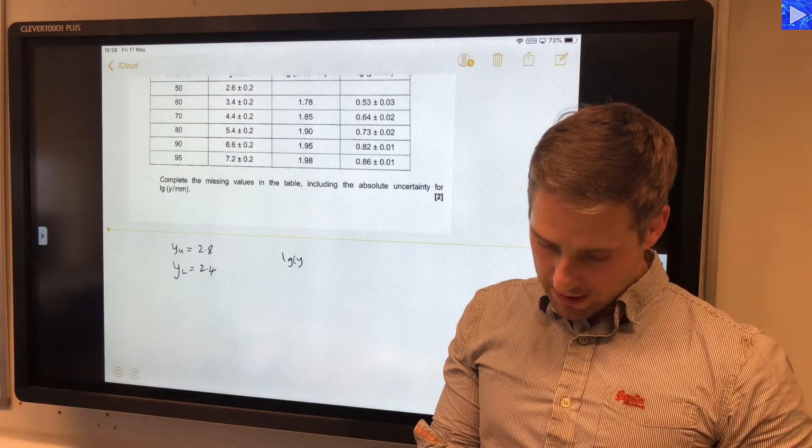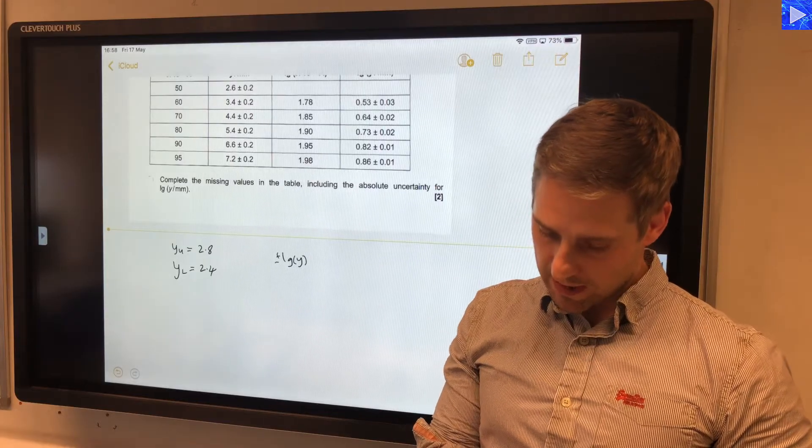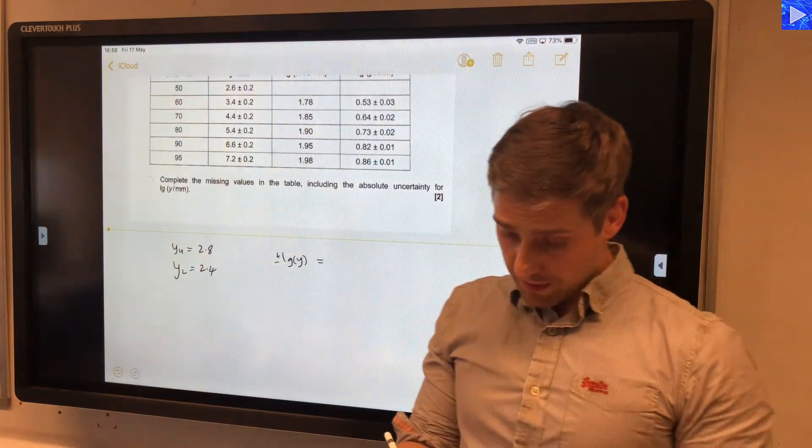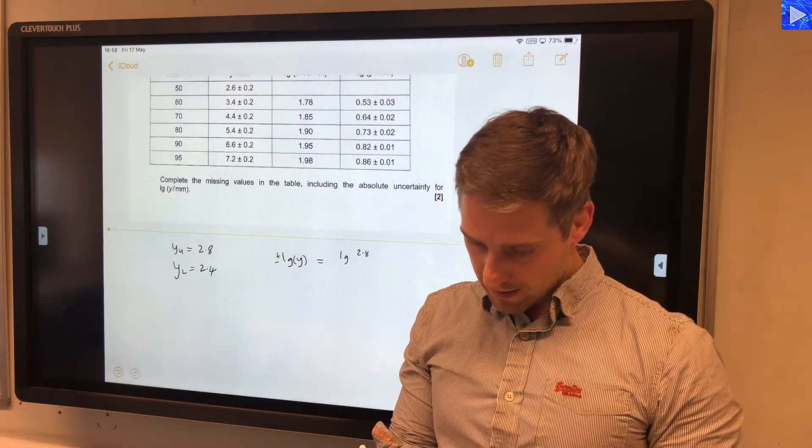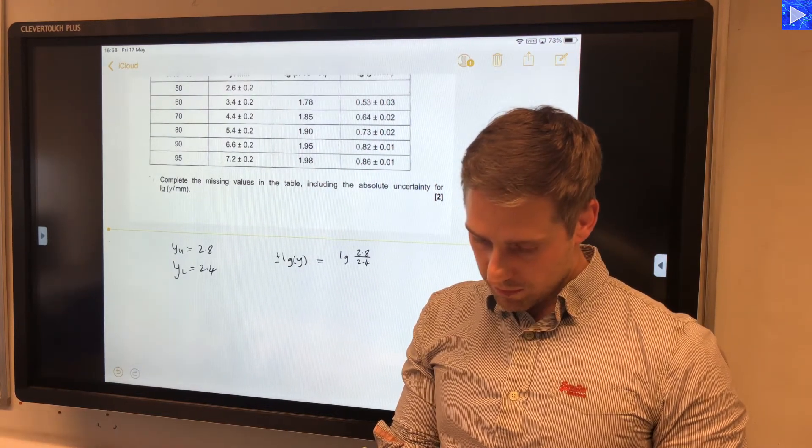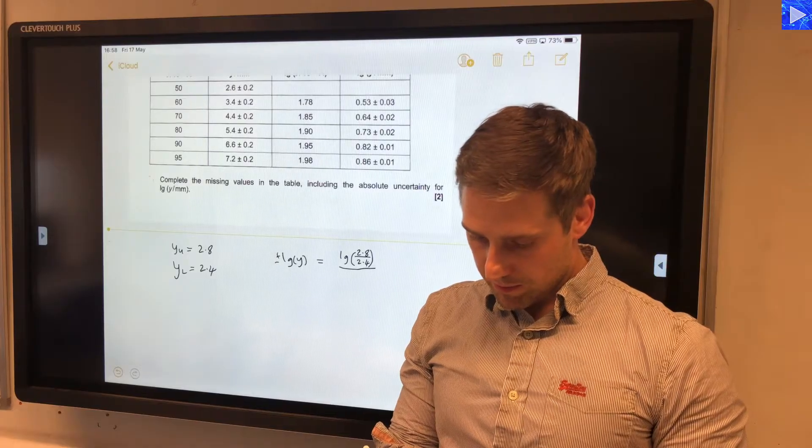...log y plus or minus the absolute uncertainty is going to be log of 2.8 divided by 2.4, divided by 2.